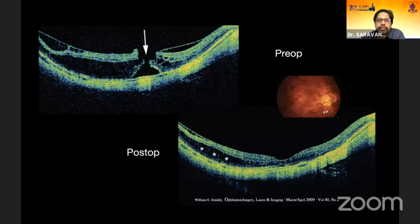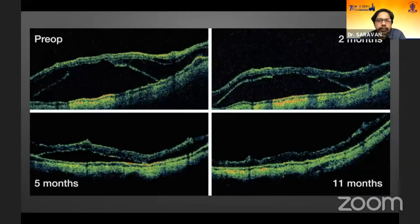Following this, Spaide proposed that only the hyaloid phase is a more clinically important structure. He demonstrated success in patients where he removed the hyaloid without removing the ILM, which is known as the sparing technique.